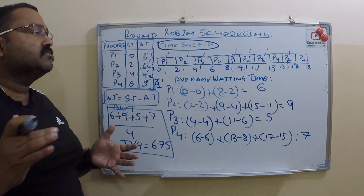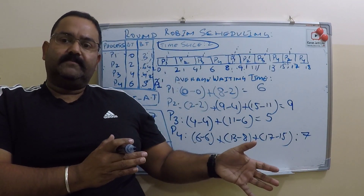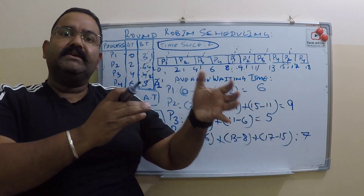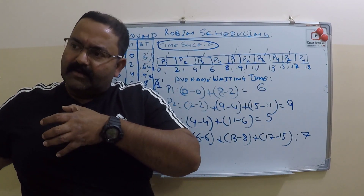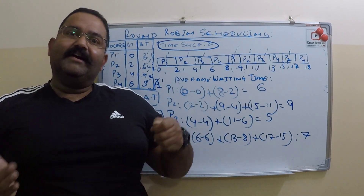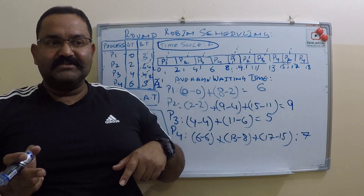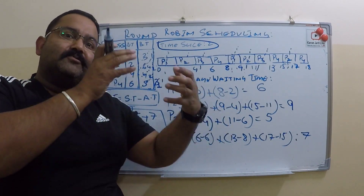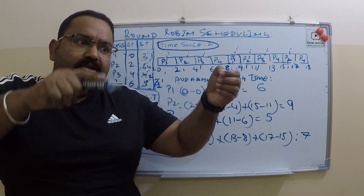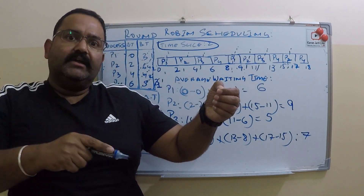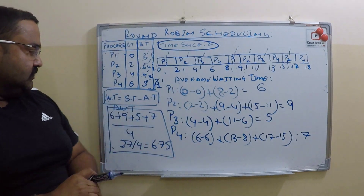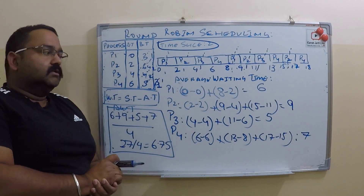So what happens in round robin scheduling? A process arrives and gets a time slot. If something is still left, it goes to the wait queue and waits for its next turn. Then some other process gets the CPU — context switching occurs. If processing is still pending, the process goes to the wait queue again. It works in a round fashion — that is why we call it round robin scheduling. And this is how you calculate the average waiting time.